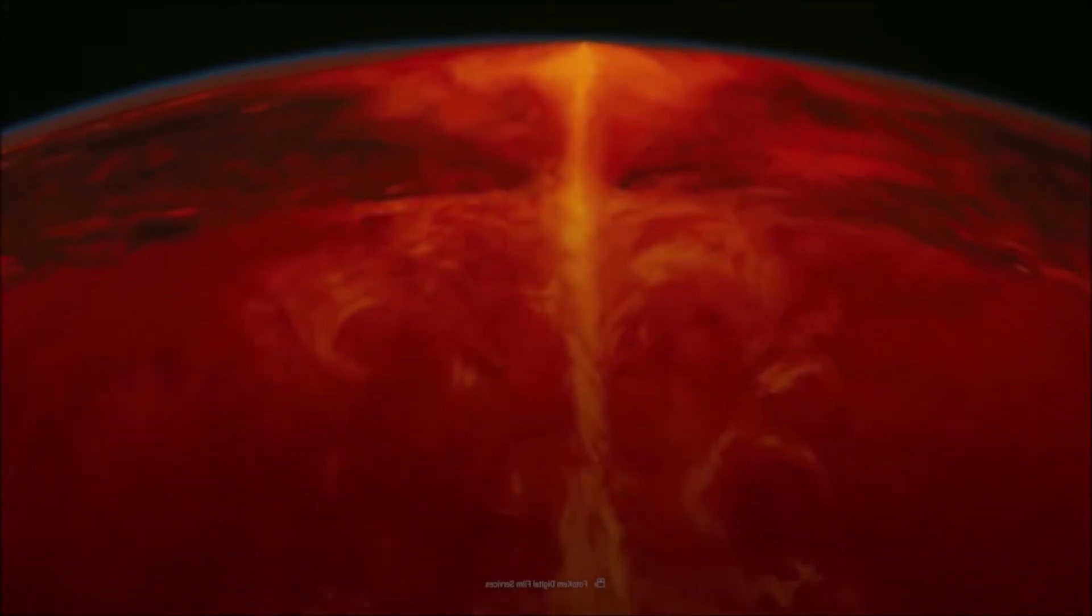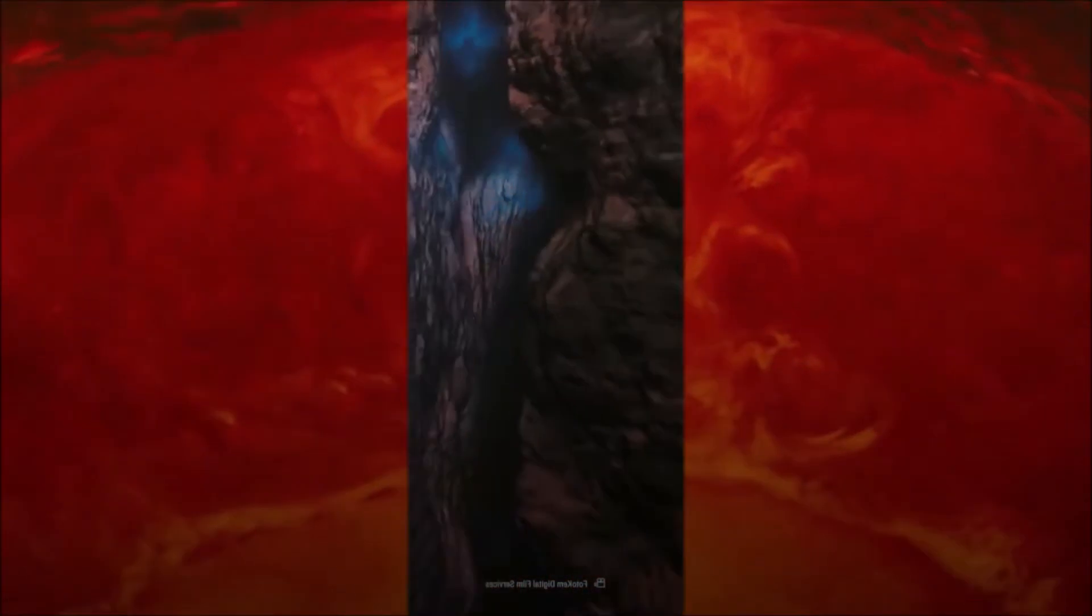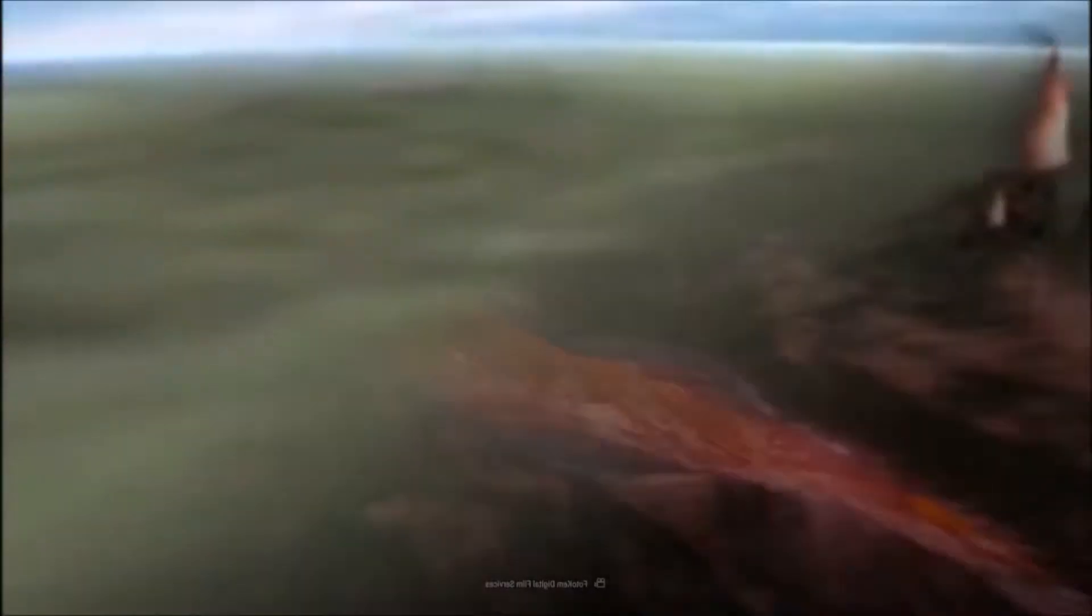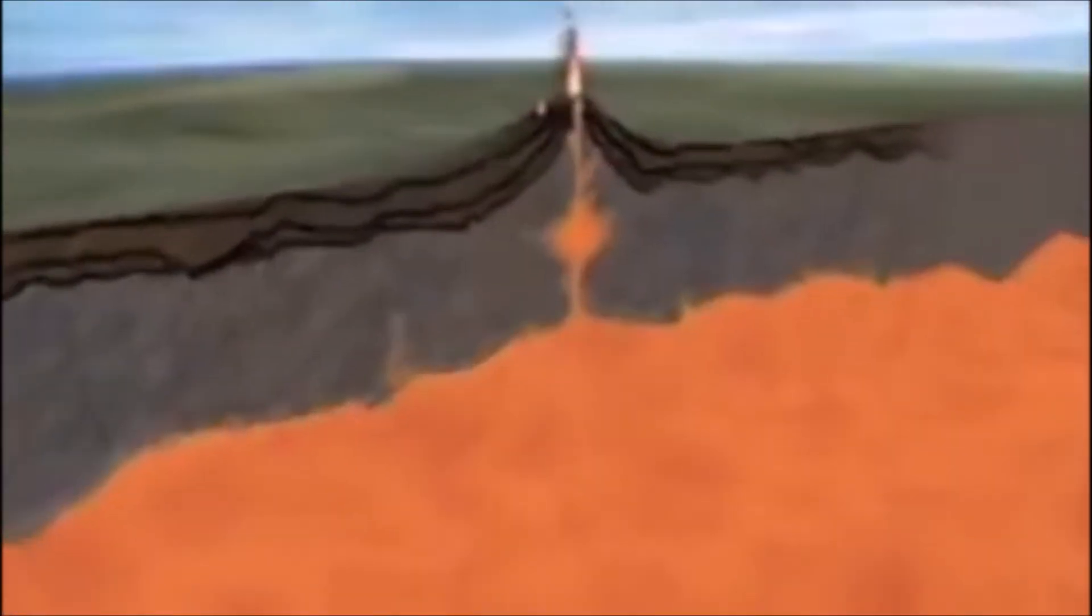Within the mantle, gravity, which acts on differences in density between hot and cold rock, causes the mantle to flow in a pattern of convection. Colder, dense material sinks deep into the mantle, especially in subduction zones. This downward flow is balanced by the upward rise of hot and less dense mantle, either as plumes beneath hot spots, or upwelling beneath mid-ocean spreading ridges.